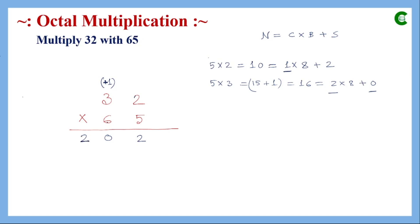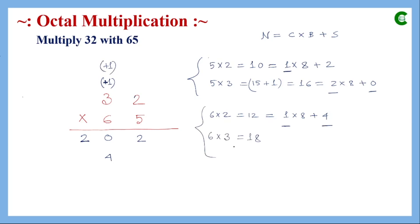Now the partial product for 6: 6 × 2 = 12, represented as 1 × 8 + 4, so sum is 4 and carry is 1. Then 6 × 3 = 18, plus carry 1 equals 19. Nineteen is represented as 2 × 8 + 3, so sum is 3 and carry is 2. Since this is the most significant digit, carry 2 is written here.